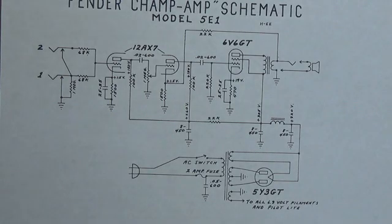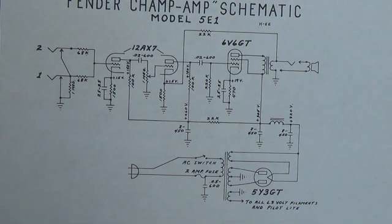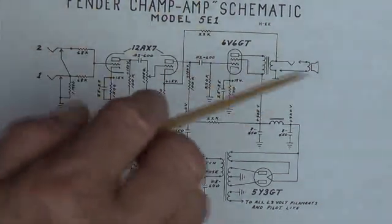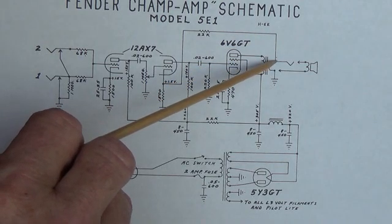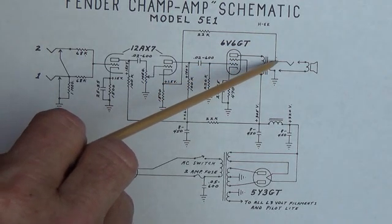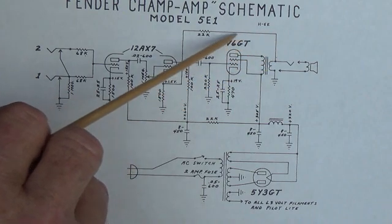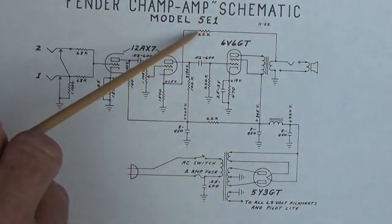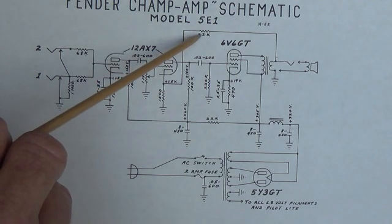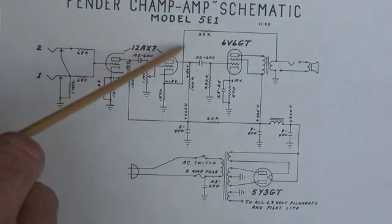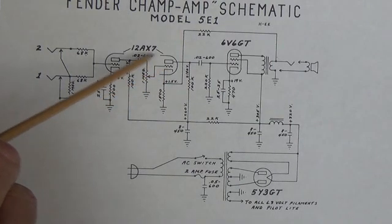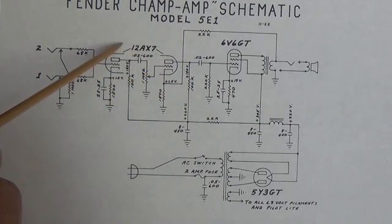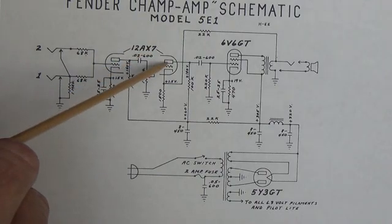Let's take a look at the original schematic for the 5E1 chassis of the Fender Champ. And this is the negative feedback loop right here. It comes out of the secondary of the output transformer, and the strength of the negative feedback signal is reduced with a 22K resistor, and then it is applied down here to the cathode of the second stage of the 12AX7 preamp tube.